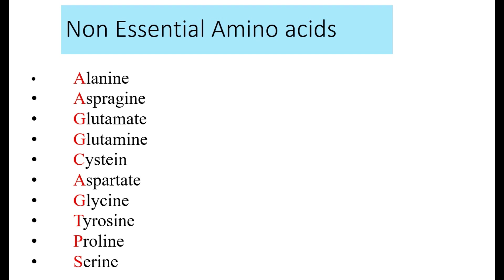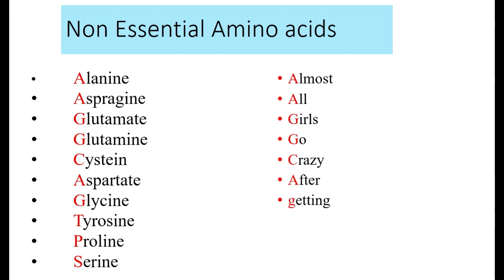Now, what is the trick to memorize non-essential amino acids? The trick is: 'Almost All Girls Go Crazy After Getting Tokens From Shopping.' A for alanine, A for asparagine, G for glutamate, G for glutamine, C for cysteine, A for aspartate, G for glycine, T for tyrosine, F for proline (from), and S for serine (shopping).